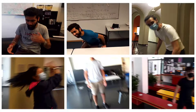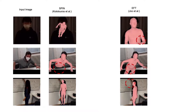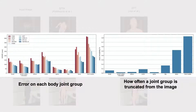The poor generalization of existing methods shows new challenges posed by egocentric data. Due to constant body movement and close human-to-human distances in social interactions, the first-person view images often exhibit challenging cases such as body truncations and motion blur. Existing methods often fail on such cases that they are not designed to handle. Here we show that the average error on a body joint tends to be higher if it is more frequently truncated from the images.